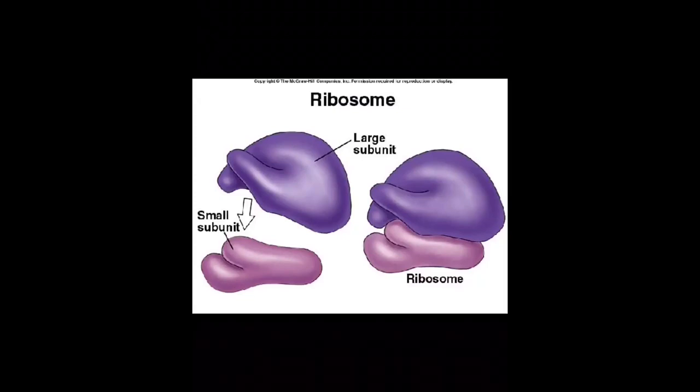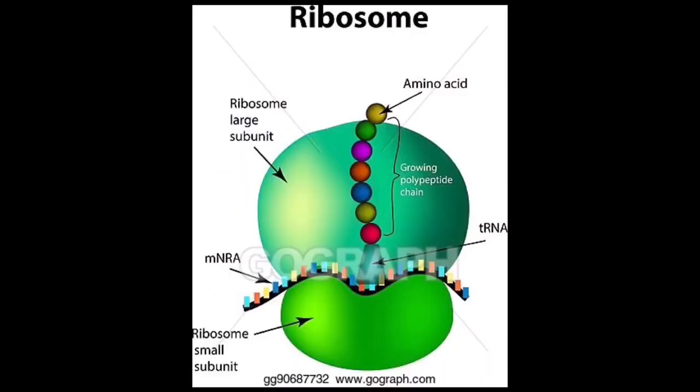Ribosomes, also called Palade granules, are macromolecular machines found within all cells that perform biological protein synthesis. Ribosomes link amino acids together in the order specified by the codons of messenger RNA molecules to form polypeptide chains.